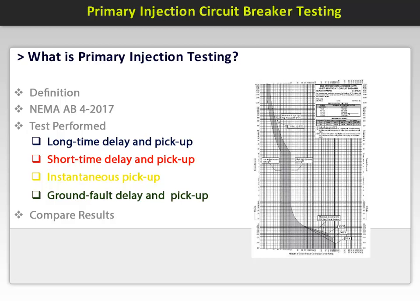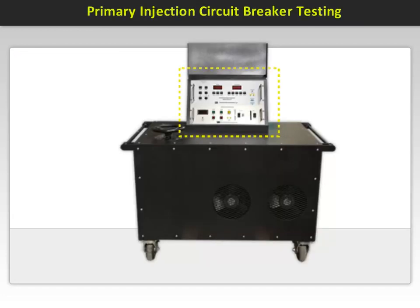Many manufacturers of primary injection test kits include most manufacturers' trip curves in the software. The heart of the test set consists of a microprocessor core unit connected to a motherboard which contains a regulated power supply and some support circuitry. Software contained in the microprocessor performs the required real-time data collection, measurement, user interface, and output control functions.